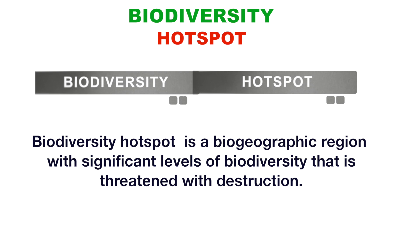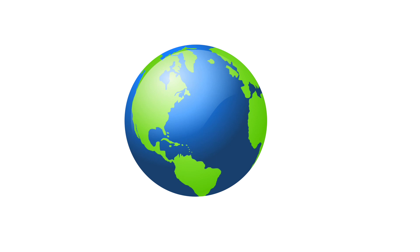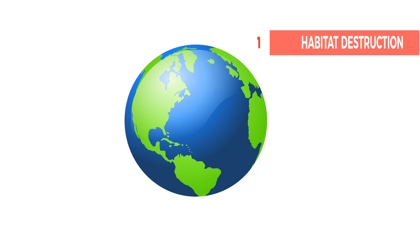Now let's see how we came up with the idea of biodiversity hotspots. Earth is in great danger and is always seeking our attention to make it a harmonious place like it used to be. Humans are extracting benefits from Earth without caring for future generations — we are now like a parasite on Earth. The planet faces habitat destruction, where the natural habitat is rendered unable to support the species present, displacing or destroying organisms and reducing biodiversity. Then we have deforestation, which is the removal of forest or stands of trees where the land is thereafter converted to non-forest use.